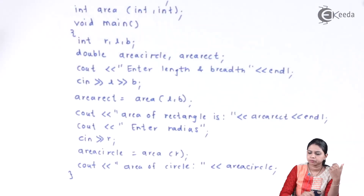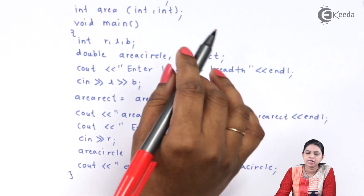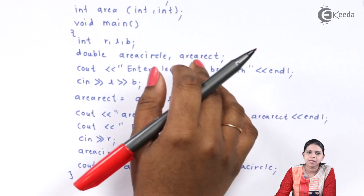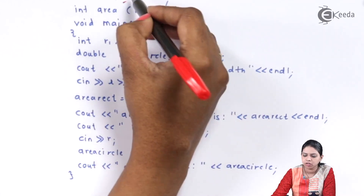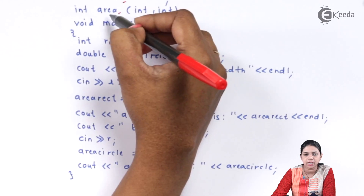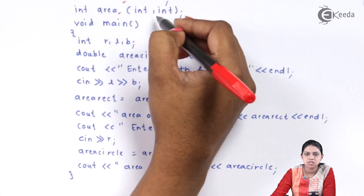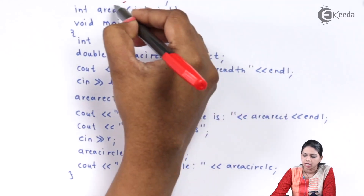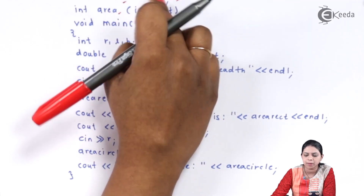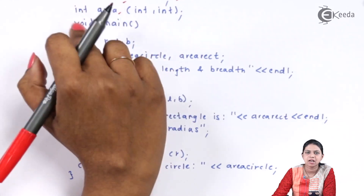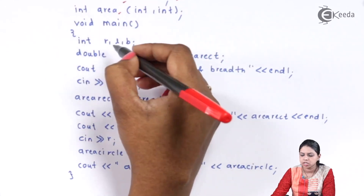For example, see this program. In this program I am calculating the area of a circle and the area of a rectangle. I have declared both functions with the same name — area — but in both cases the parameters are different. In the first case, area is declared with one parameter, and in the second case, area is declared with two parameters.